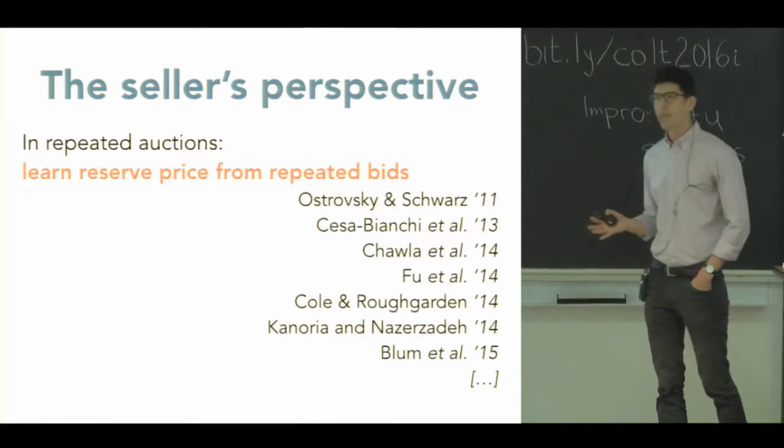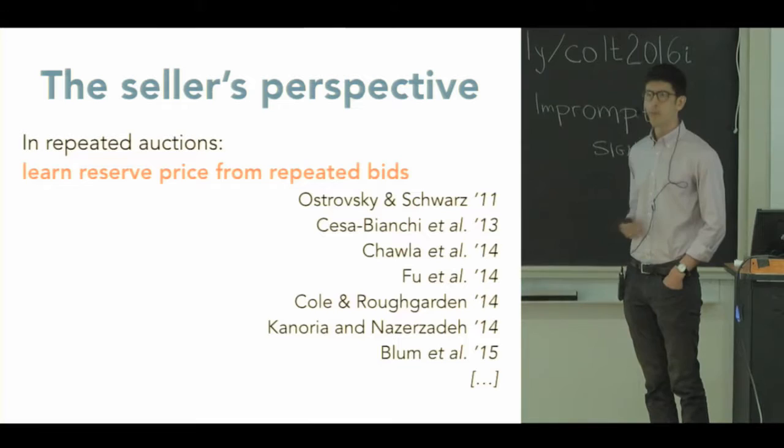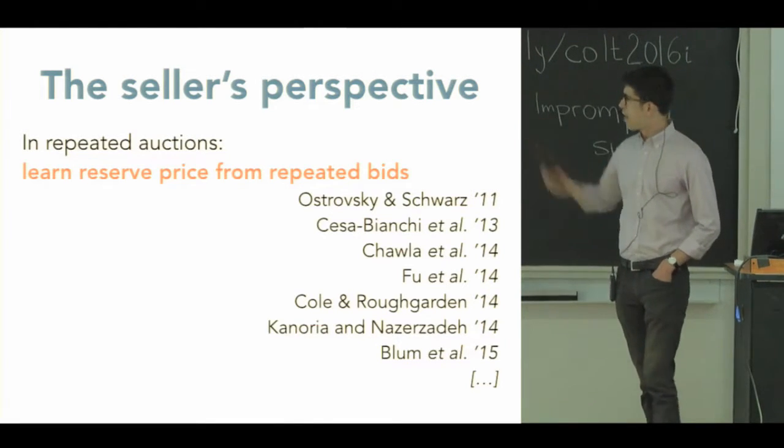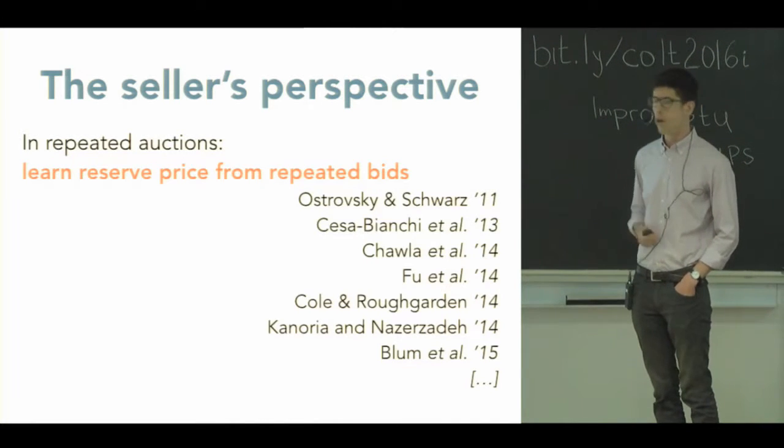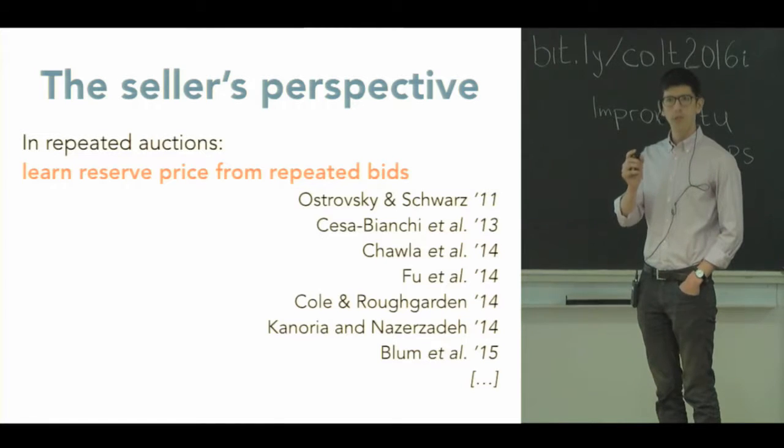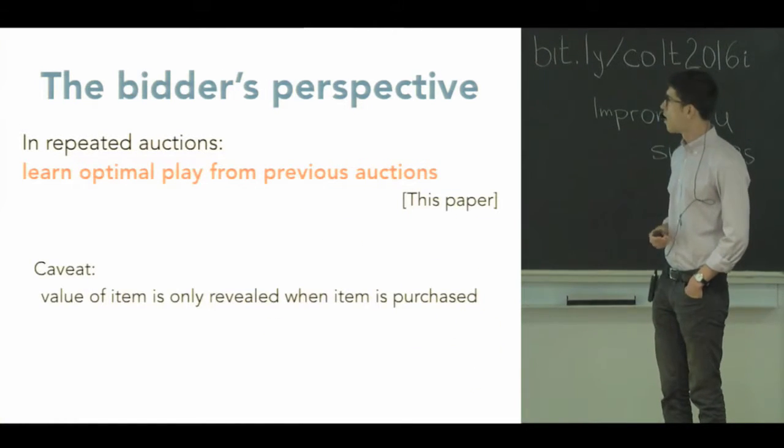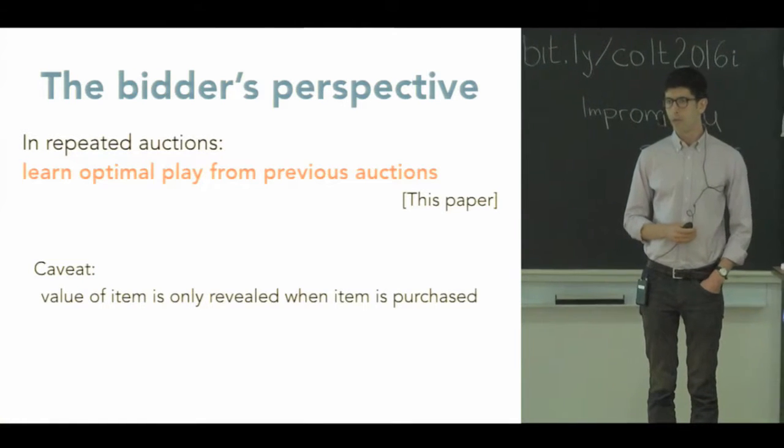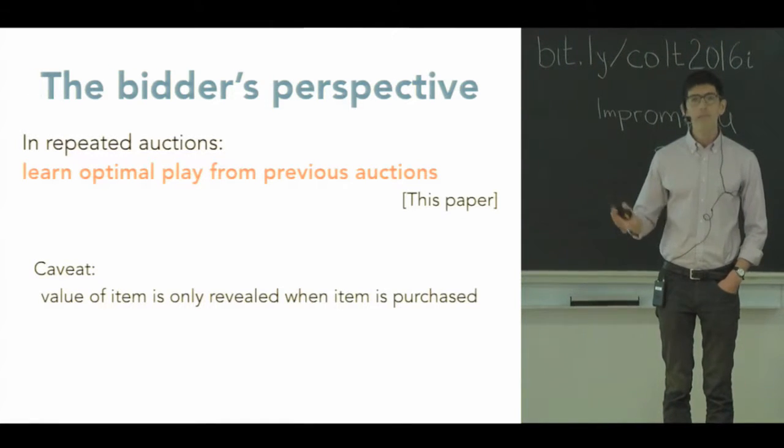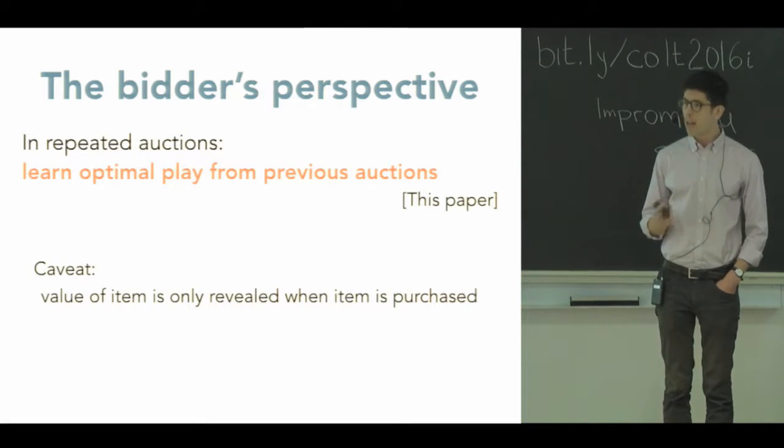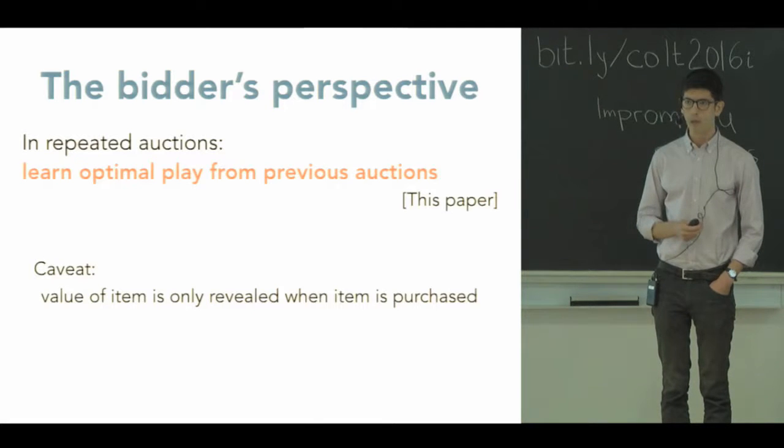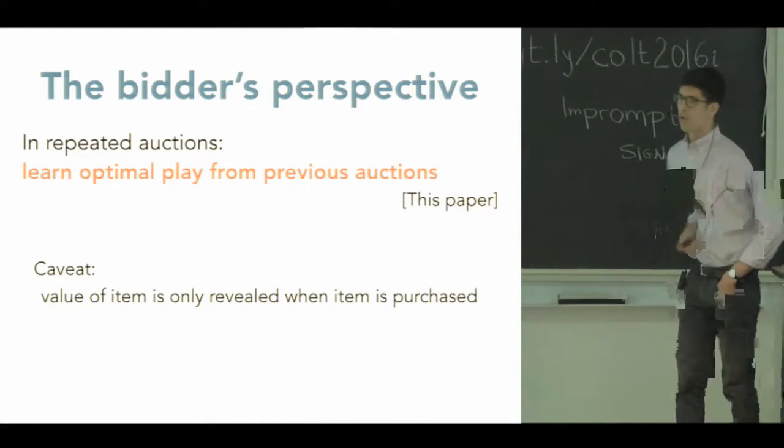So on the seller side, this is actually a question that's been considered a number of times before. And there's a series of beautiful papers that say how the seller needs to learn the proper reserve price. This 2013 paper by Cesa-Bianchi et al. has a really nice algorithm and a regret framework for saying exactly how this should function from the seller's perspective. And really all that needs to be learned is this reserve price. This talk will focus on the bidder's perspective. How can the bidder learn optimal play over the course of repeated auctions? And the challenge here, from an information standpoint, is that if I've never purchased the item before, I don't even have a sense of what my expected value for this item should be. Moreover, I don't learn any information about how valuable the item is unless I actually buy it.